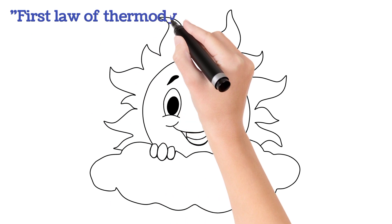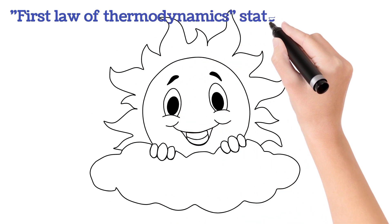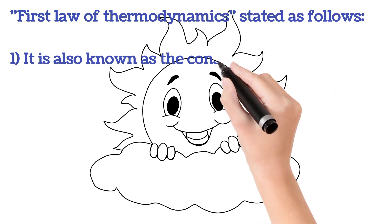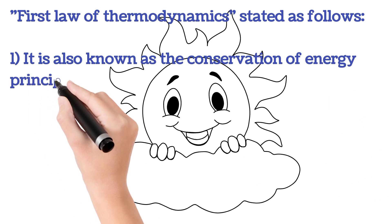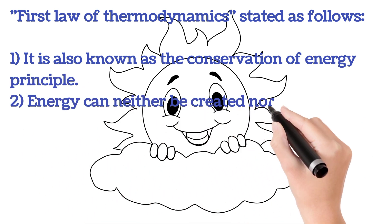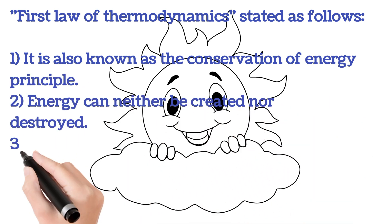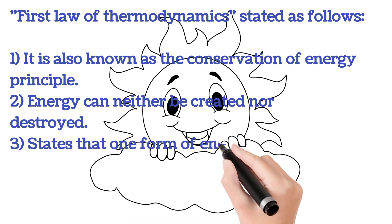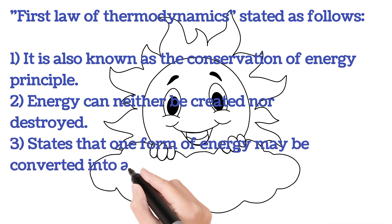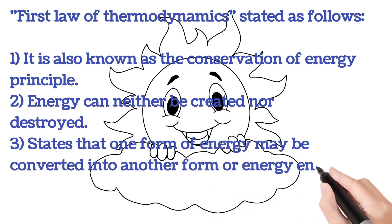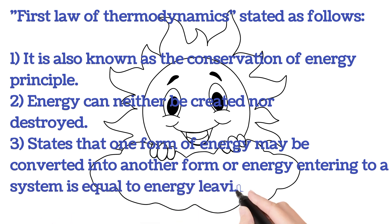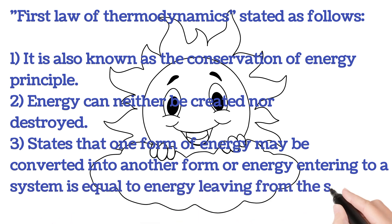Next, the first law of thermodynamics, stated as follows. Number one: it is also known as the conservation of energy principle. Number two: energy can neither be created nor destroyed. Number three: states that one form of energy may be converted into another form, or energy entering a system is equal to energy leaving from the system.